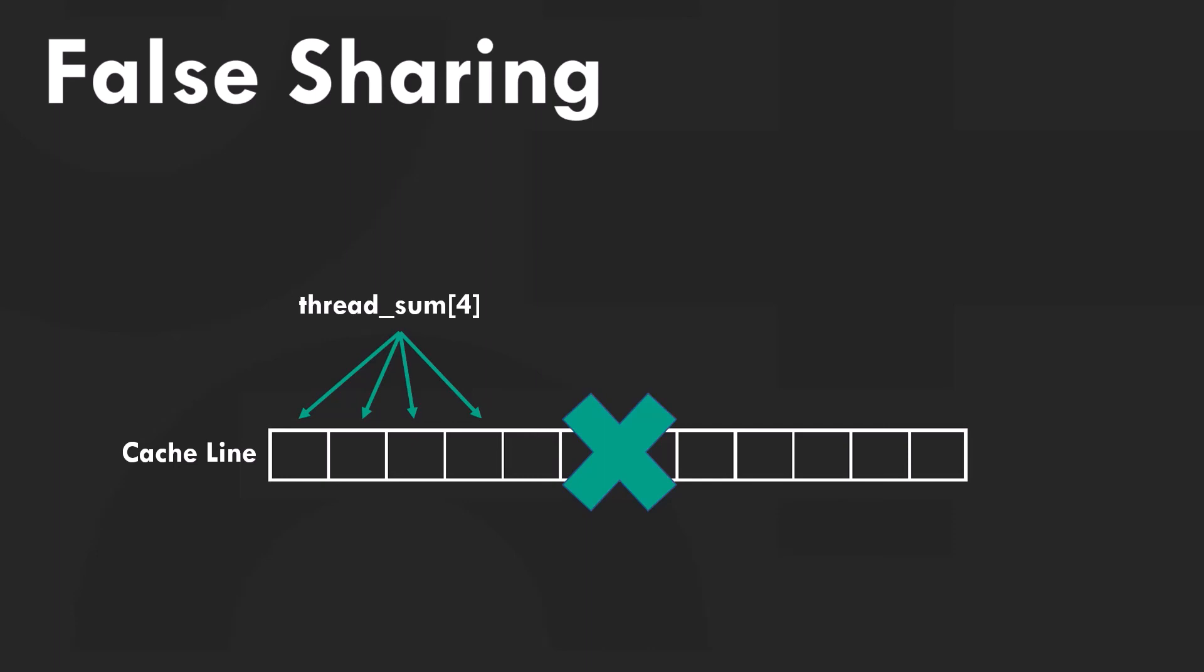This causes the thread to fetch a more recent copy of the thread_sum array every time. This creates a lot of overhead and makes the program slow and inefficient. This problem is very common and can be overcome by using special constructs.